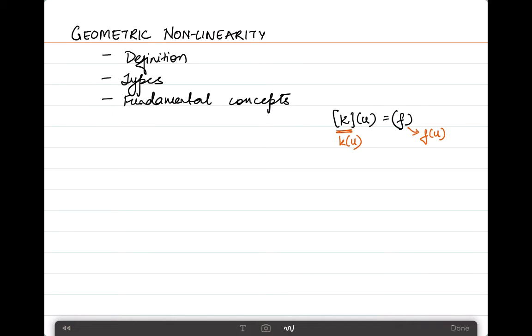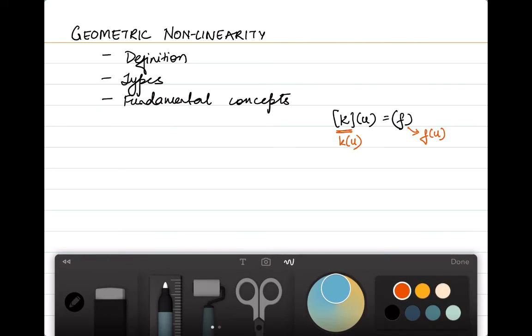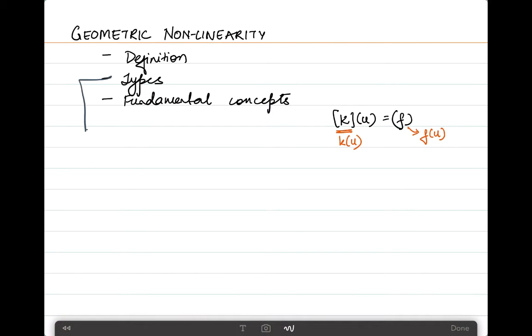There are, of course, two particular types of geometric non-linearities. So let's discuss the types. The first one is to do with large deformation or you can also say large strains. The other one is large displacements but do not necessarily have large strains. So they can be large displacement and small strain problems.